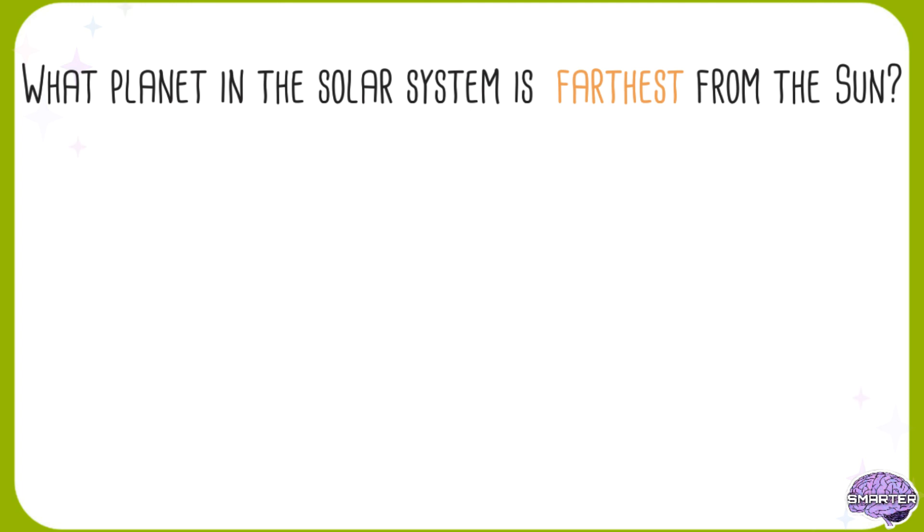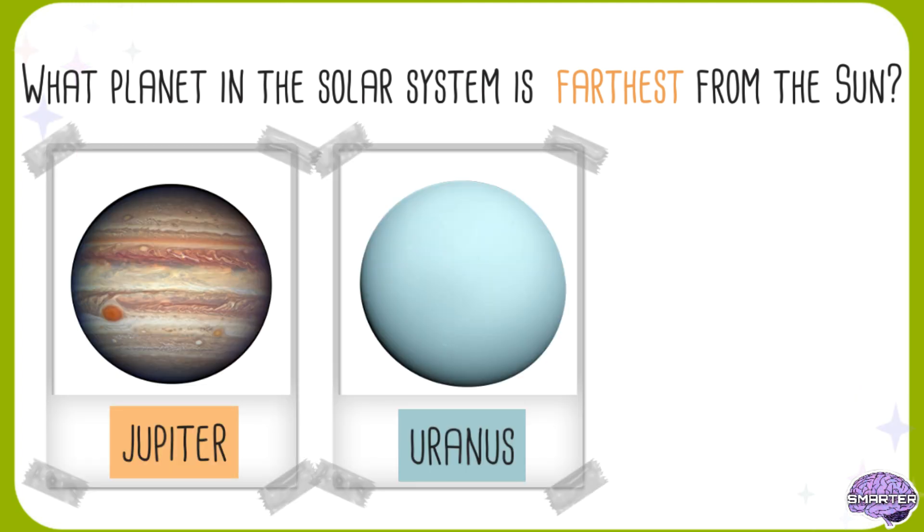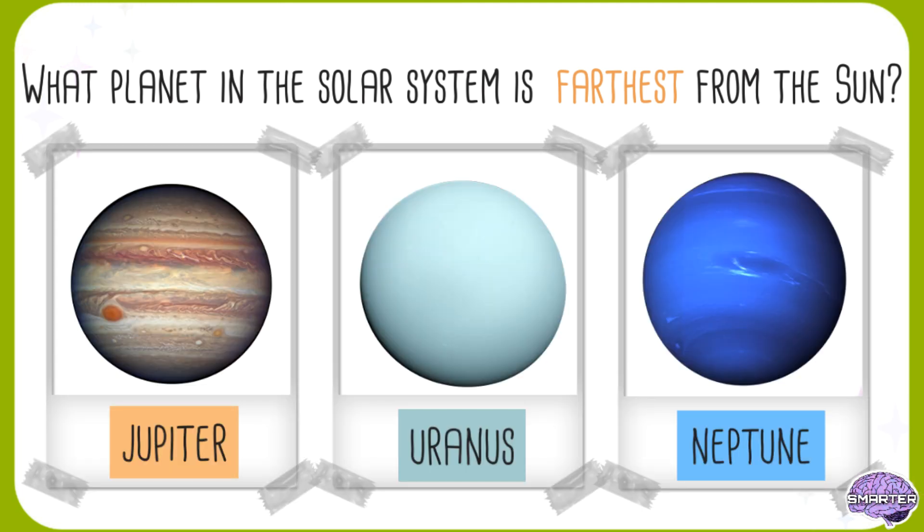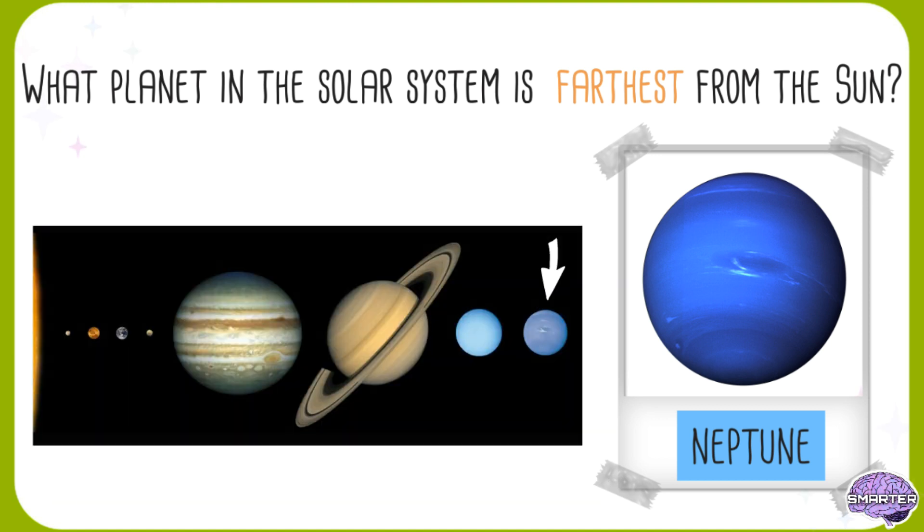What planet in the Solar System is farthest from the Sun? Neptune.